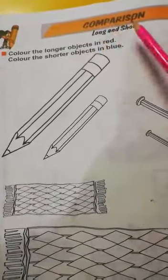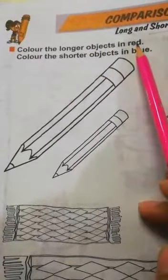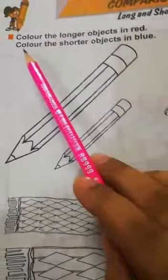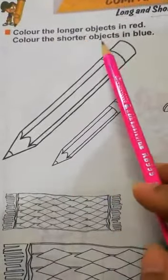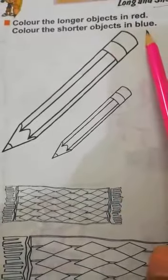Long किसे कहते हैं? बड़े को, short, छोटे को. Color the longer object in red. Color the shorter object in blue.